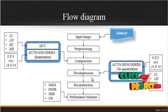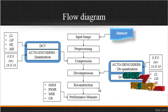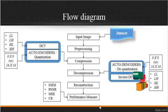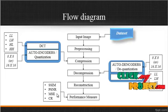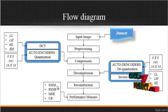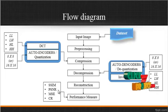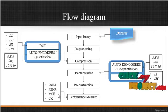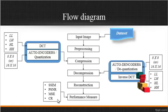After the decompression, the reconstructed image's performance is evaluated by means of SSIM, PSNR, MSE, and CR. SSIM indicates the structural similarity index matrix, PSNR indicates the peak signal-to-noise ratio, MSE indicates the mean square error, and CR represents the compression ratio.